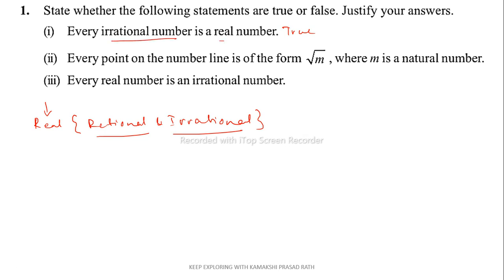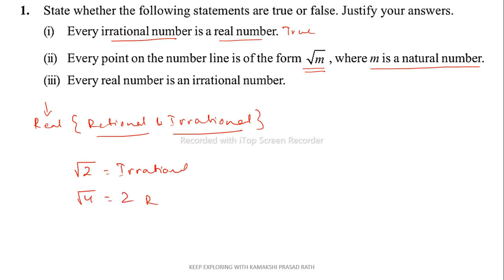The next point says that every point on the number line is of the form √m, where m is a natural number. Now, the square root of any natural number like √2 is an irrational number, and √4 equals 2, which is a rational number. A real number line consists of all the rationals and all the irrationals.